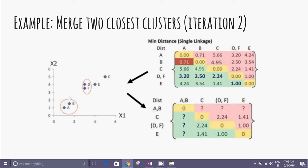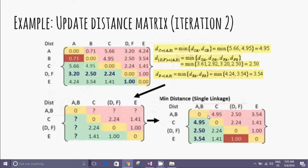When we cluster A and B, we generate a new question, a new distance matrix in this second iteration. The new distance matrix can be recalculated using the single linkage again.